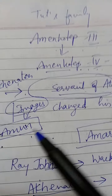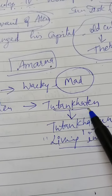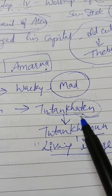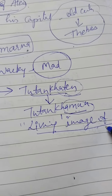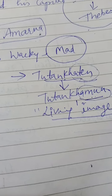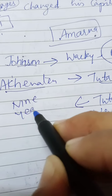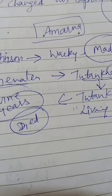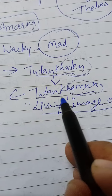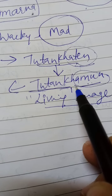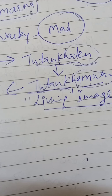Akhenaten had destroyed the pictures of Amun, but after his death his successor Tutankhaten changed his name — where Aten means Sun Disc — to Tutankhamun, meaning 'living image of Amun,' thereby restoring the old god. He reigned for nine years and then suddenly died unexpectedly.